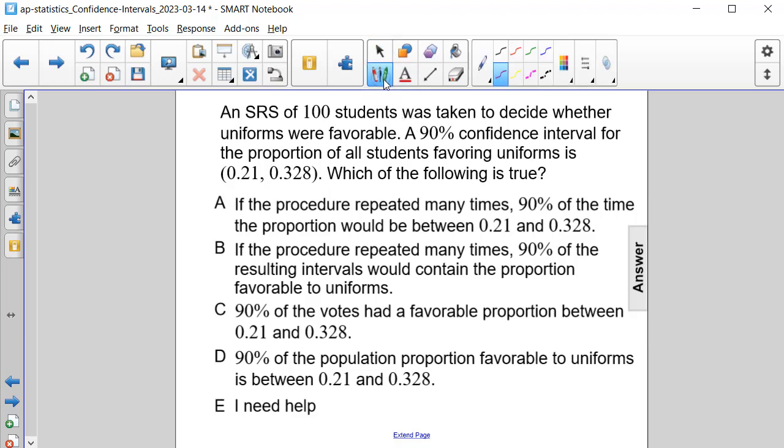With confidence intervals, we know that the procedure has to be repeated many times. So therefore, answer choices C and D can be ruled out right away because they don't say that the procedure is repeated many times. Confidence intervals represent multiple times that procedures are repeated.